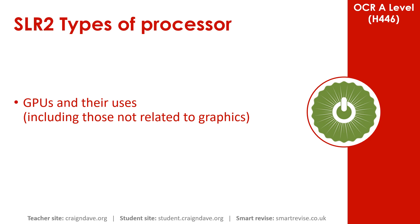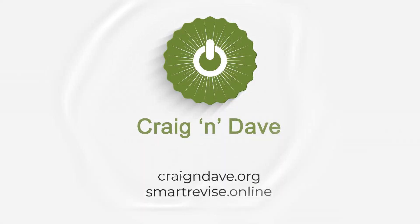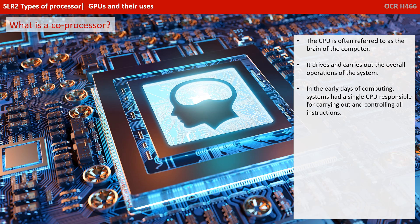In this video, we're going to take a look at graphical processing units and their uses. An analogy is often used where the CPU is referred to as the brain of the computer. It effectively drives and carries out the overall operations of the system. In the early days of computing, systems had a single CPU responsible for carrying out and controlling all instructions.